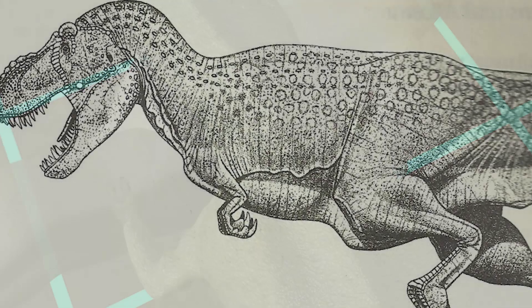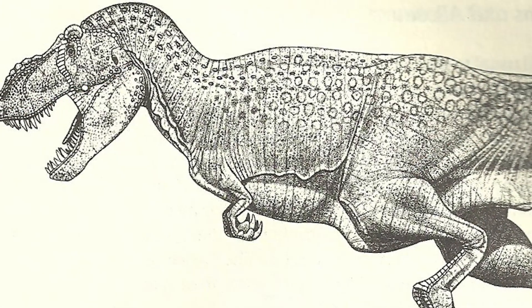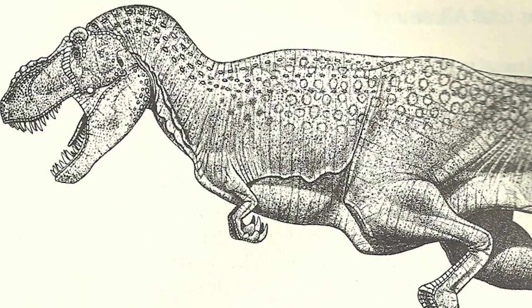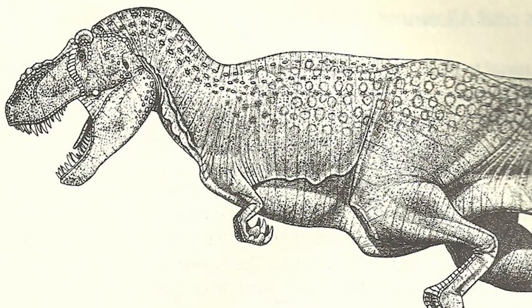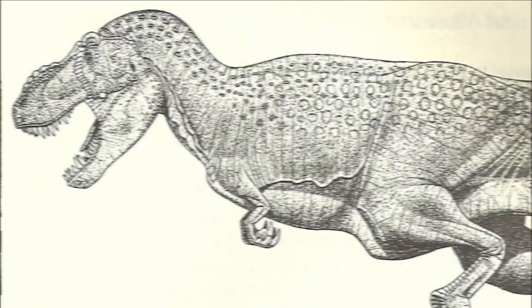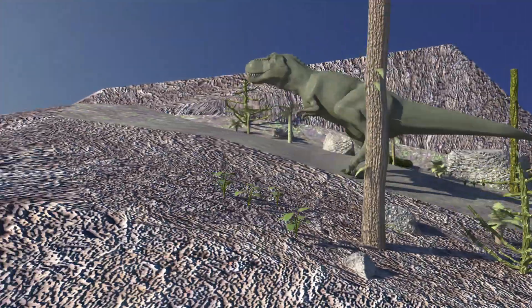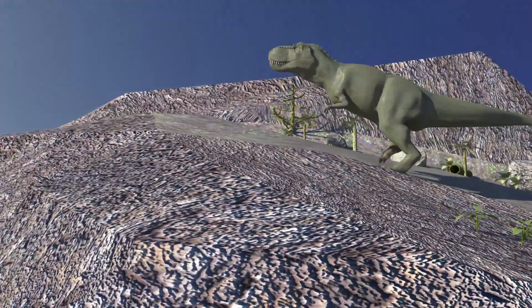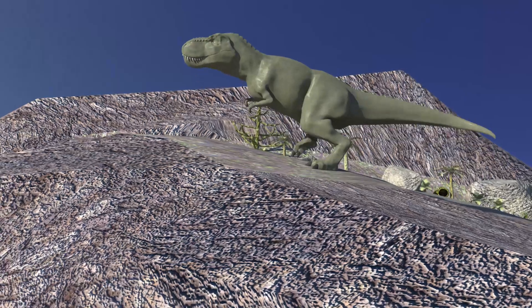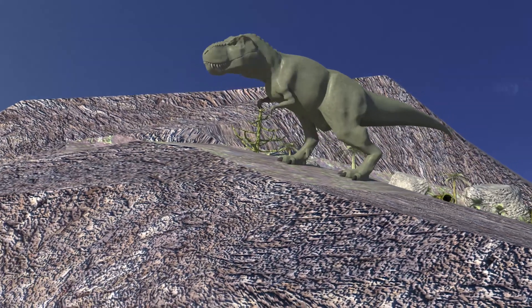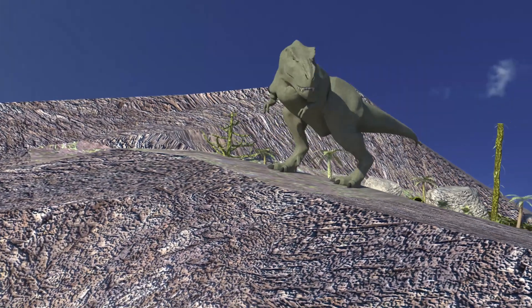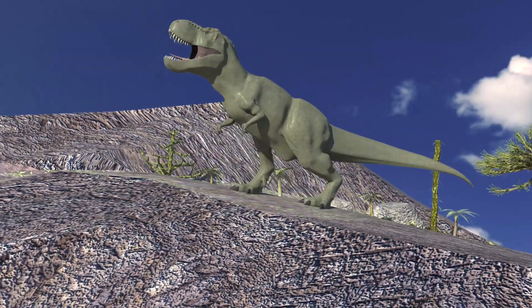At the end of the day, perhaps we should adopt Gregory S. Paul's view on the small arms situation, as he expressed in Predatory Dinosaurs of the World — that the reduced size of T-Rex's forelimbs showed they were not important to their owner, and that therefore they should not be important to us.